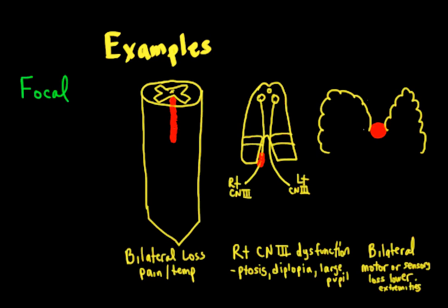Now, if I make the first lesion bigger, it will start to pick up the anterior horn. If I make the right cranial nerve three lesion bigger and hit the crus cerebri on that side, I'm going to start to pick up additional findings — these are called neighborhood signs. They help you localize the lesion. But this is still a focal lesion; when you have other findings, you put them together to localize it better, and you've got to know your neuroanatomy to do that.